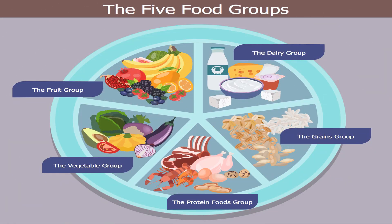These are the five food groups: the dairy group, grains group, protein foods group, vegetable group, and fruit group. In the dairy group, we have milk, cheese, yogurt and many more. The grain group includes rice and breads. In the protein group, we have meat, chicken, eggs, and seafoods like shrimp and lobster.